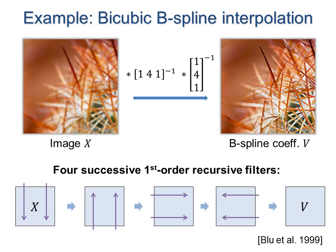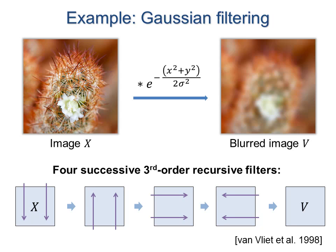Another example is applying Gaussian blur to an image, which involves convolution with a low-pass filter kernel. This can be efficiently approximated by a sequence of third-order recursive filters.